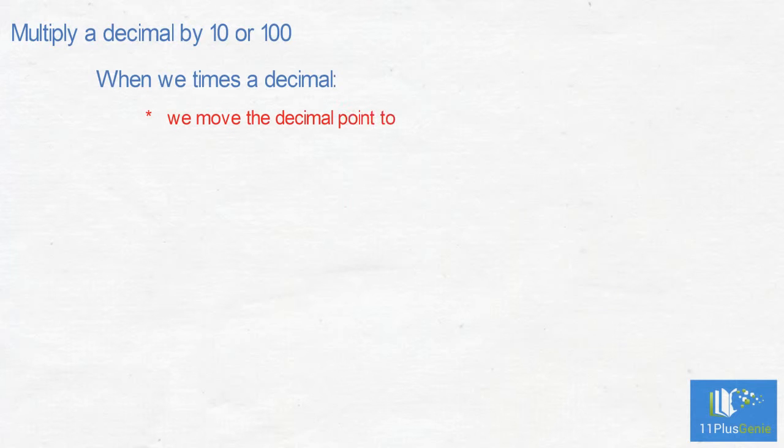Multiply a decimal by 10 or 100. When we times a decimal, we move the decimal point to the right.